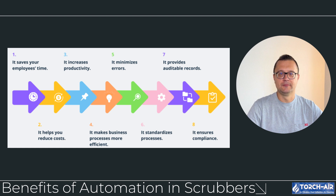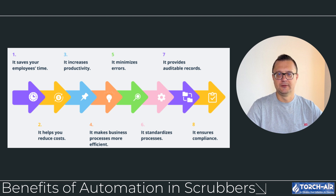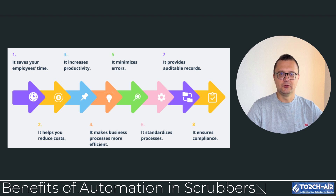Benefits of automation in scrubbers. Automating scrubber systems offers several key benefits, reducing manual intervention and improving overall equipment efficiency. Process stability: automation ensures consistent operational parameters, reducing the likelihood of breakdowns and extending the equipment's lifespan. Resource efficiency: automated control of solution supply, reagent dosing, and energy consumption minimizes operating costs and resource waste. Enhanced safety: automation reduces the need for manual involvement, which not only improves operational accuracy but also increases safety by quickly addressing potential issues before they escalate.